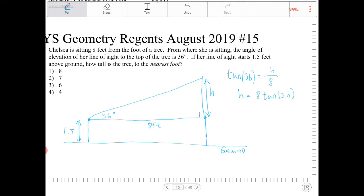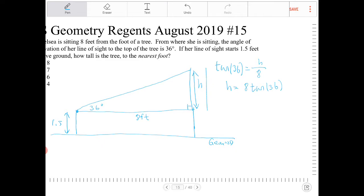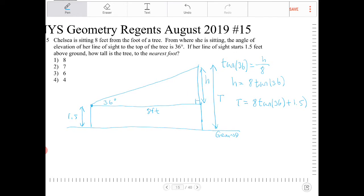And whatever value that I get at the end, let's say I represent the total length of the tree here with the letter T. T is equal to 8 tangent of 36 plus 1.5, because Chelsea is observing this 1.5 feet above ground.